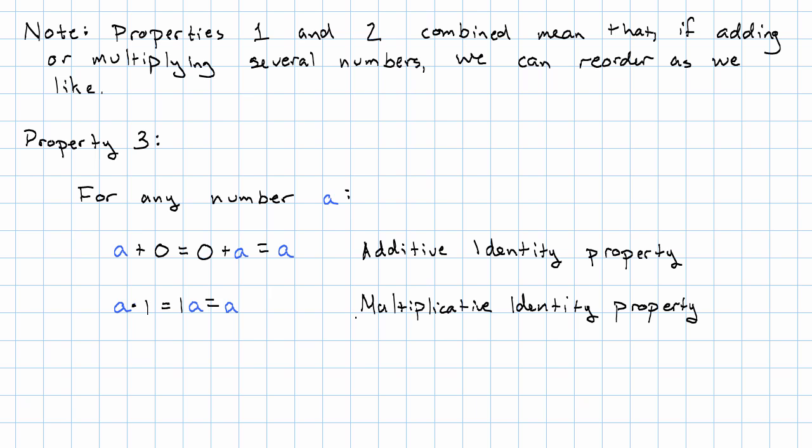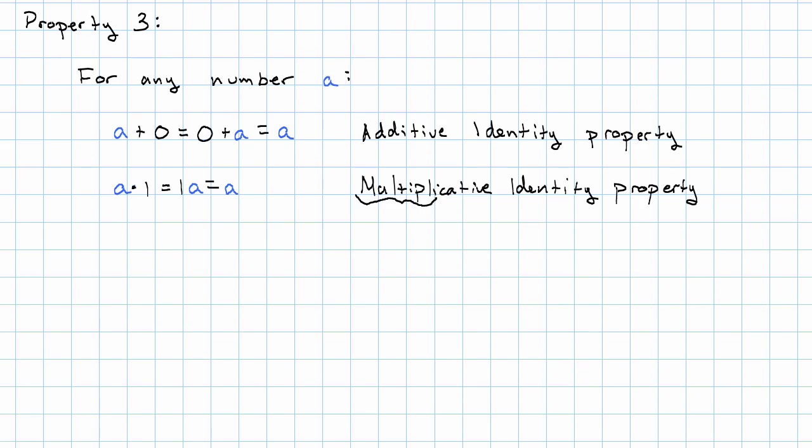This word multiplicative is hard to get used to. Right? This first part is just multiply. So, multiply multiplicative. Property four just has to do with zero. It's creatively called the zero property of multiplication. Anything times zero is just zero. Those two are fairly simple properties. The most interesting thing we're saying about them is that those actually have a name.